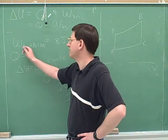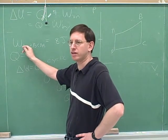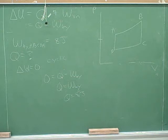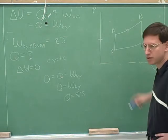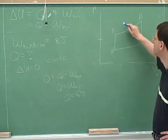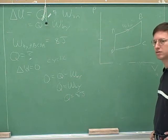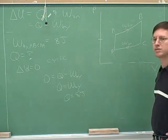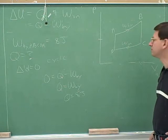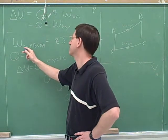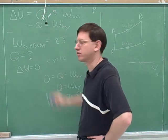Even if I hadn't told you that work was being done by the gas, you should still have been able to figure out that on net, work was being done by the gas. How can you tell? When we go from A to B to C to A, from A to D the volume is increasing, so the work is done by the gas. This confirms which equation is more convenient to use — the one focused on work done by the gas.